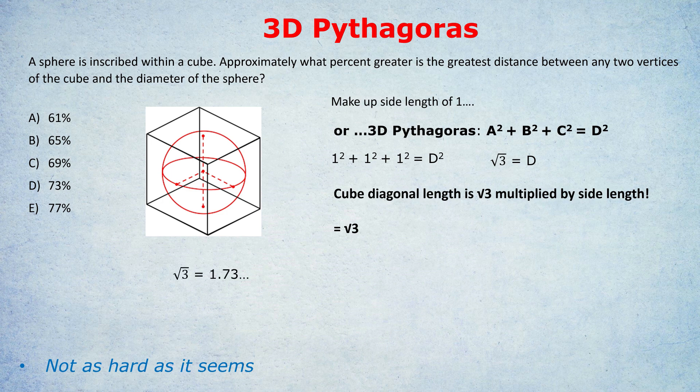Now, let's compare those two numbers. Root three, that's the greatest distance between any two vertices, the three-dimensional diagonal. Root three, if we use a calculator, is 1.73. Or you can know it off by heart as being very close to 1.7. And the diameter of the sphere is 1 using our made-up numbers. And therefore, the root three is 73% greater than the 1. So the answer is d.